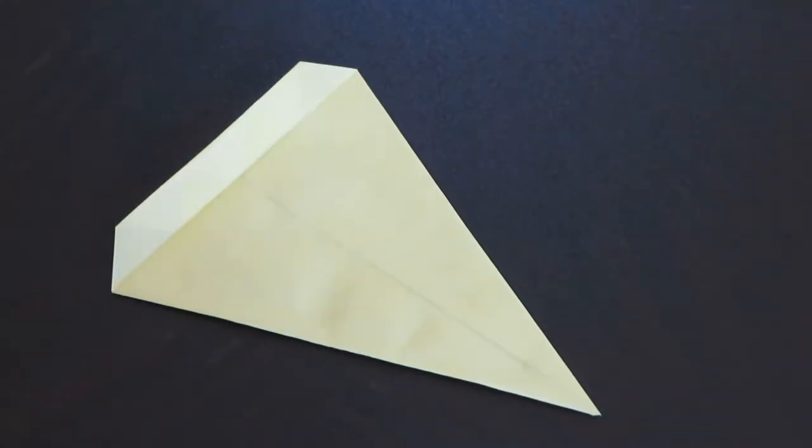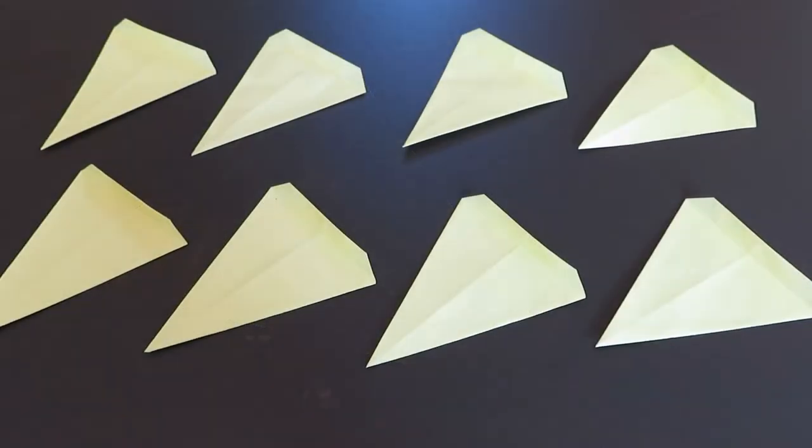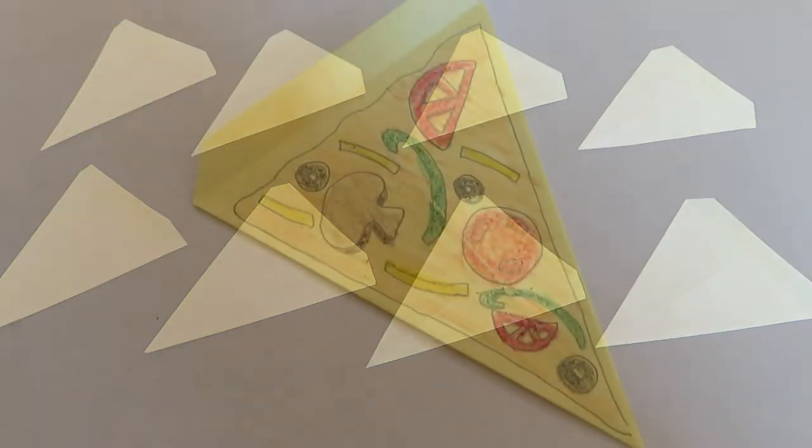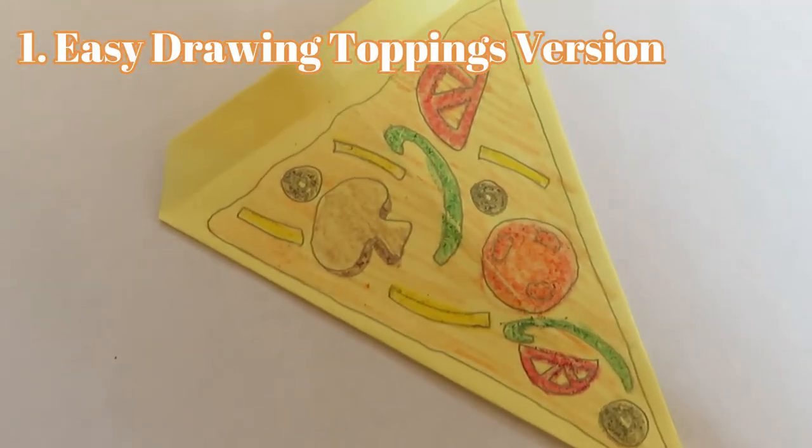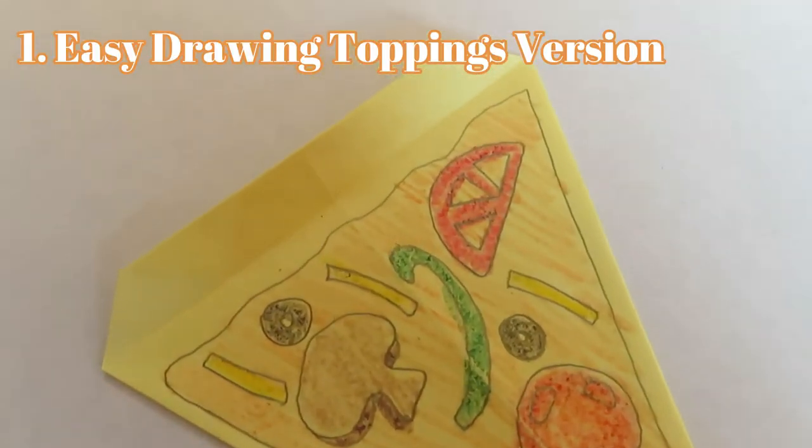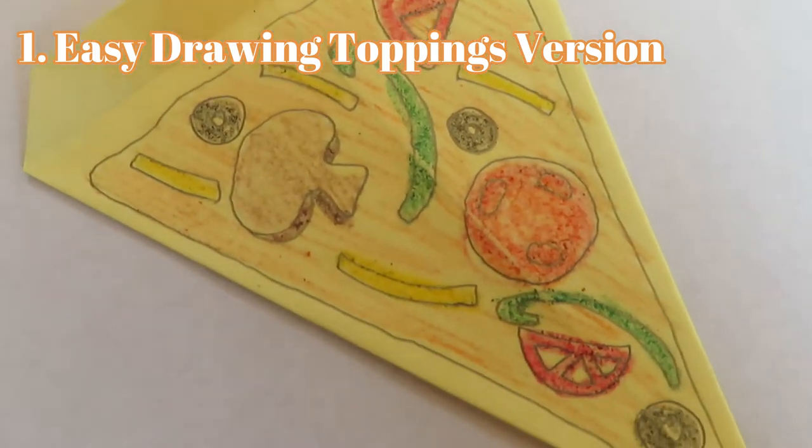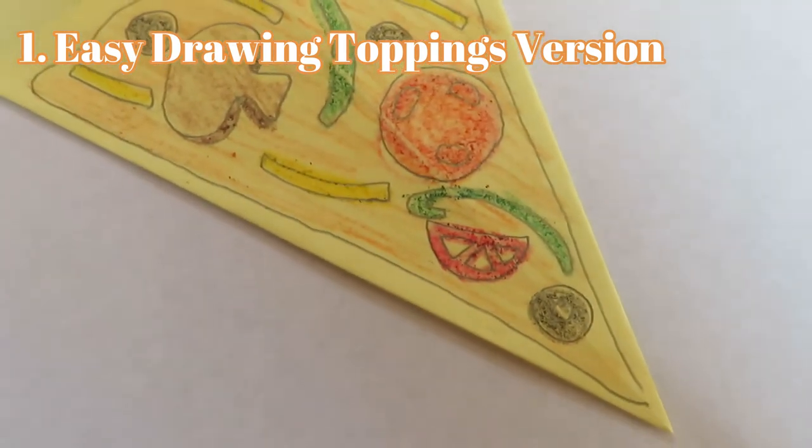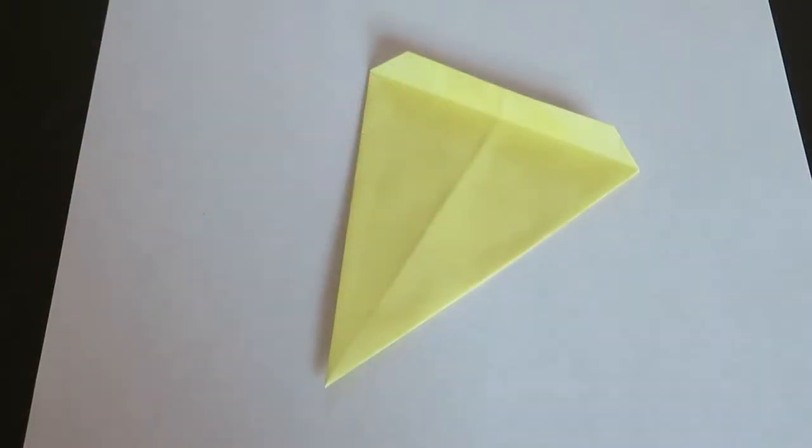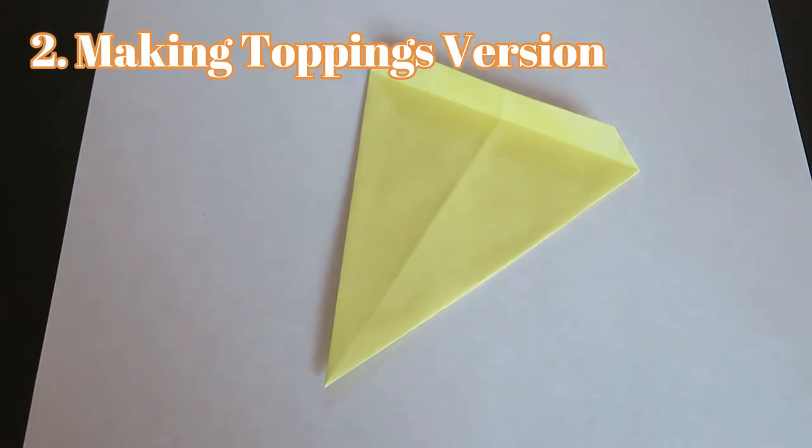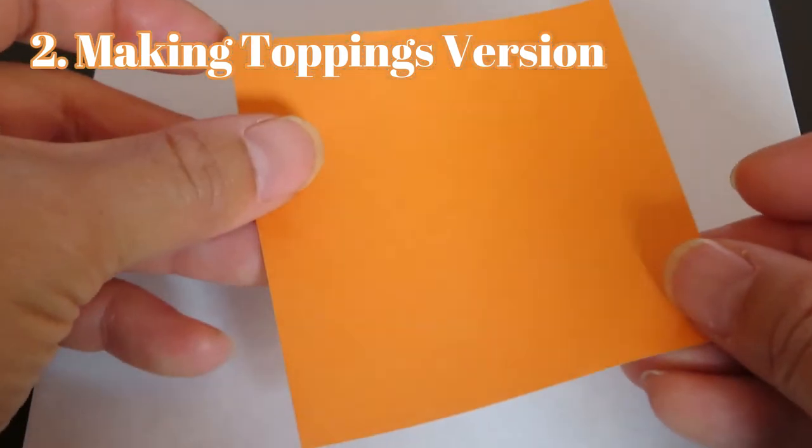Now here are eight pizzas and here is what I drew. So you can have your children draw the toppings like this. I think this way is easy for small children. Now if you want to make toppings and play with them I will show you some stuff, it's very easy.